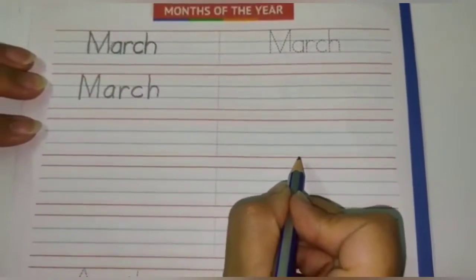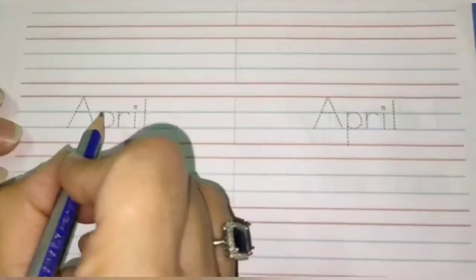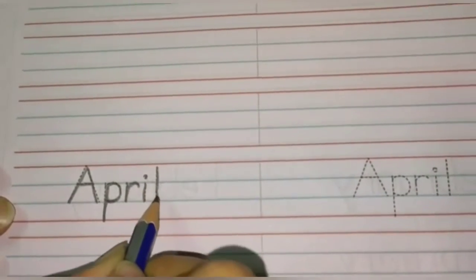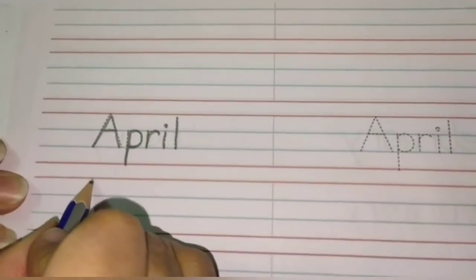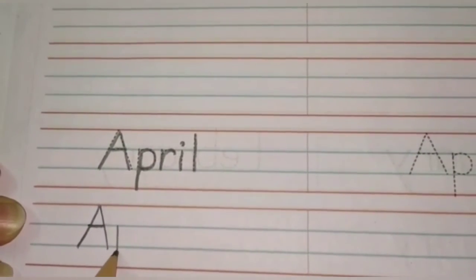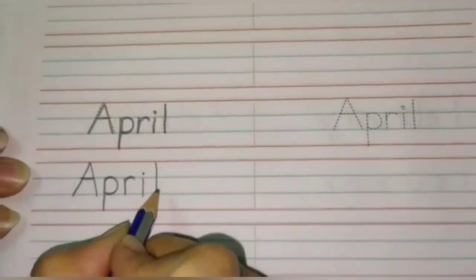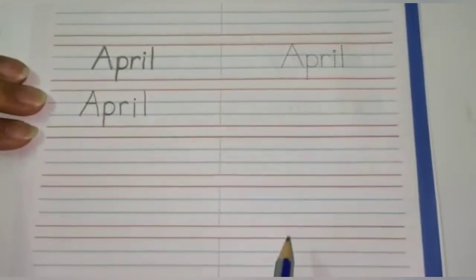You will write it two times on this side. Then we have April, capital A, P, R, I, L. Once more, capital A, P, R, I, L. April. This also you will write it on both the columns.